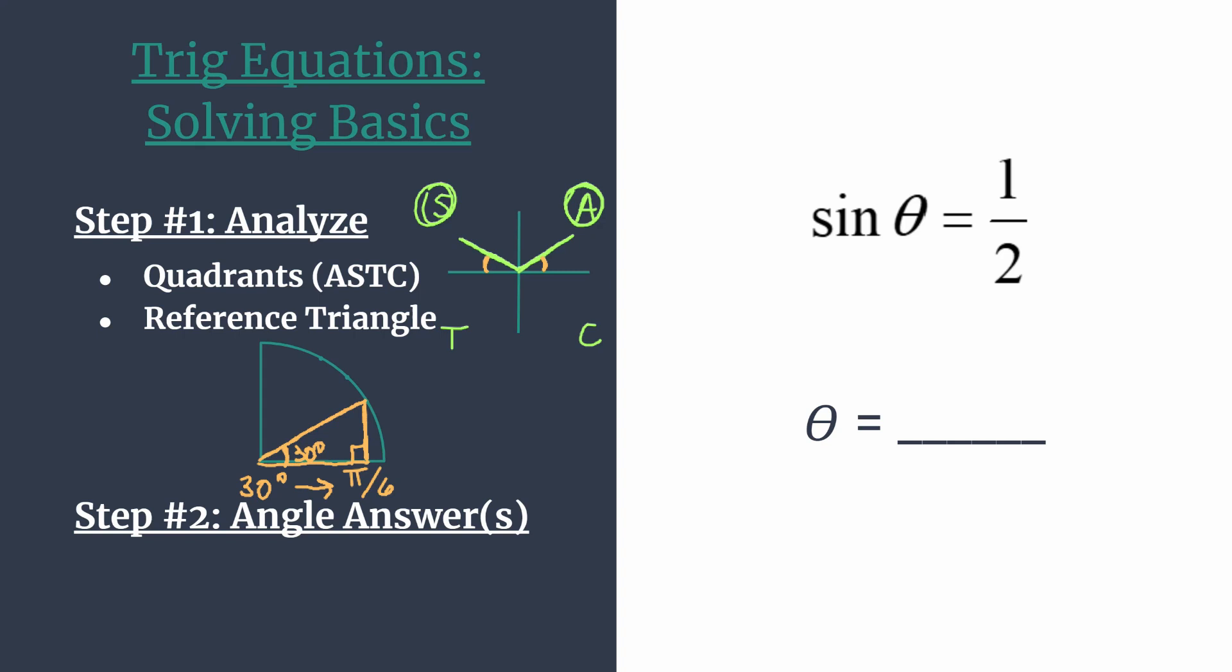So now we're ready for step two. Let's actually state our angle answers. And first we're going to do this if we were just asked to find the answers on the interval zero to 2 pi. So those are sometimes referred to as on the unit circle. And let's start with our angle in quadrant one. This one's a pretty easy one to find because we know that angle simply rotates from its standard initial position pi over 6 radians.